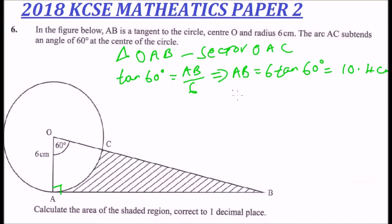Having gotten that, then we can find the area of triangle AOB. We say area of triangle OAB is equal to a half base, that is a half, the base is 6, multiplied by height, which we have found is 10.4, that is AB. When you work that out, you should get 31.2 centimeters squared.